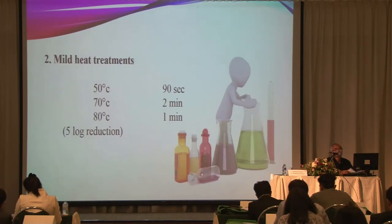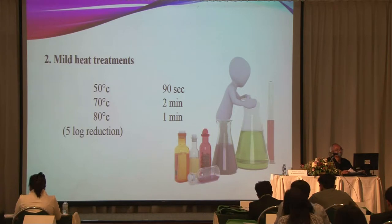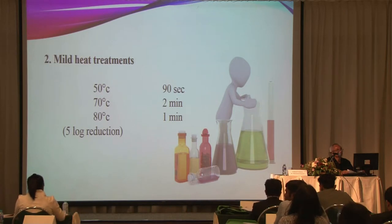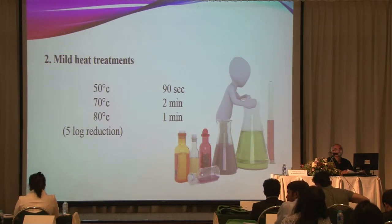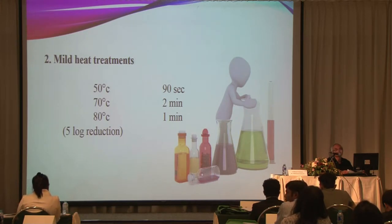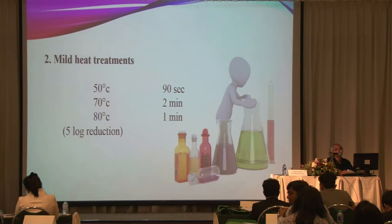Organic acids — for example, citric acid, lactic acid, and carbonic acid — can reduce E. coli by more than 6.7 log cycles. You can also use mild heat treatments to eliminate microorganisms in food and vegetables: 80°C for 1 minute, 70°C for 2 minutes, or 50°C for 90 seconds. Some measures can achieve a 5 log cycle reduction; however, heat may affect the quality of the product, so you need to research or experiment to find what temperature and time is appropriate for your product.